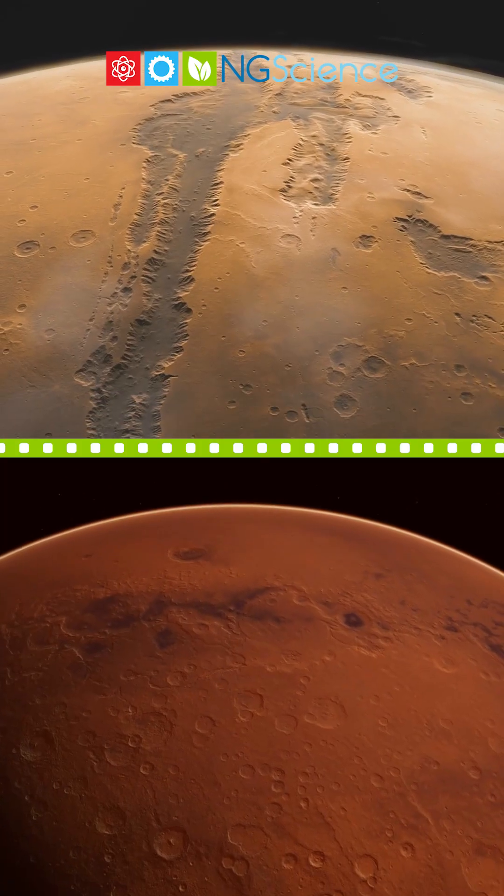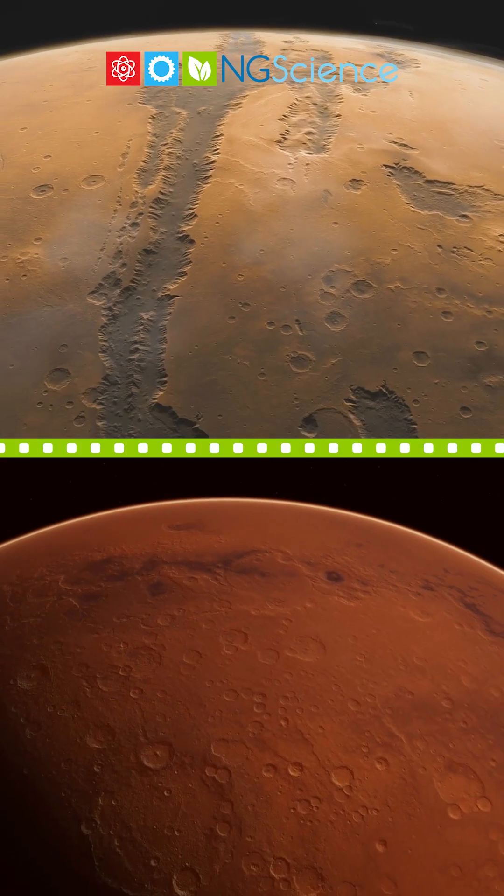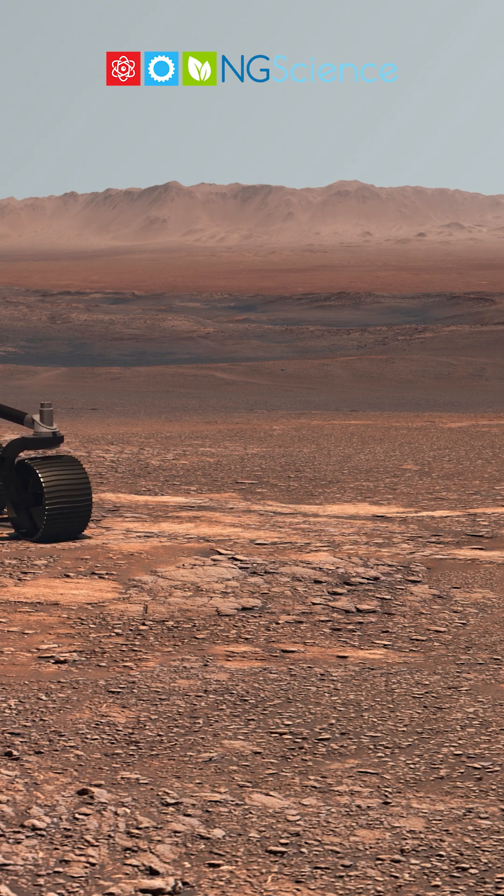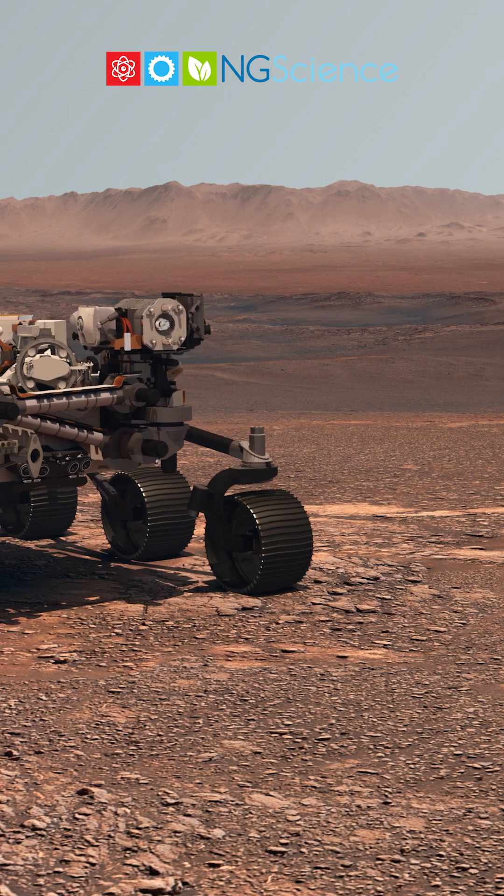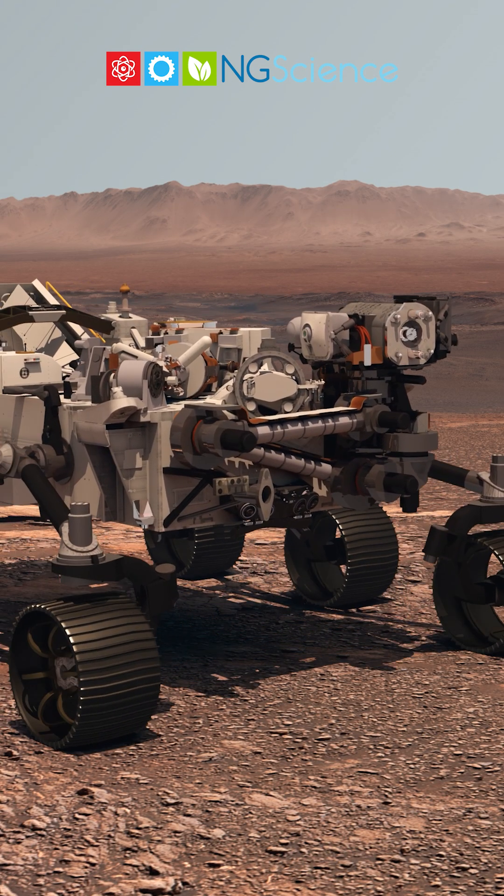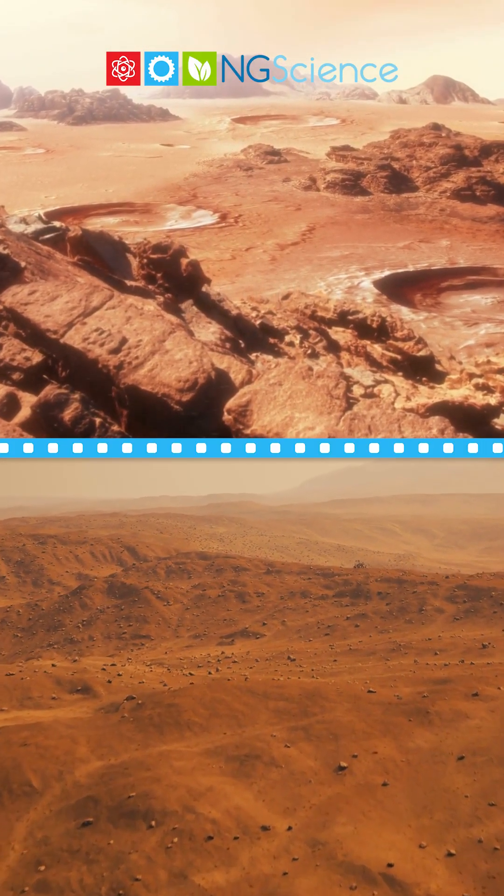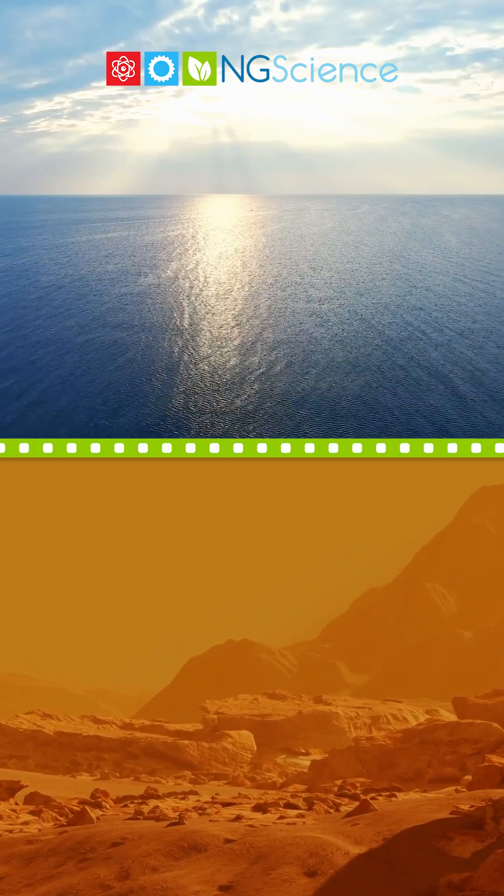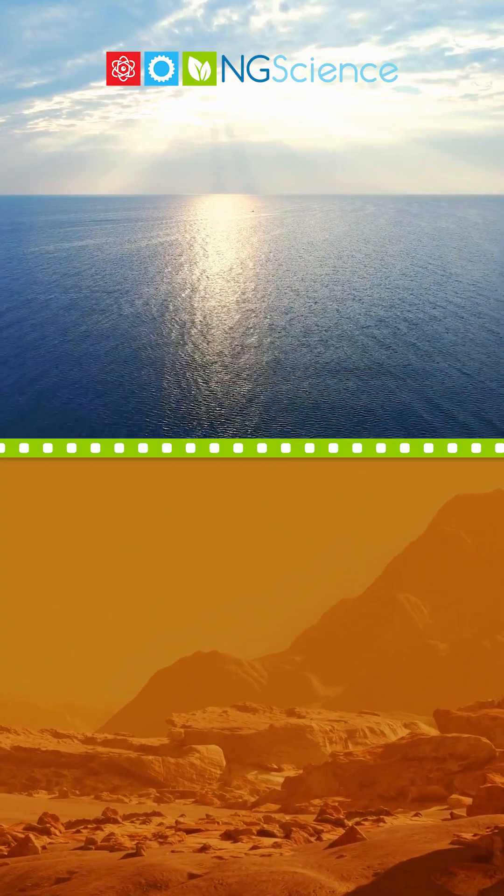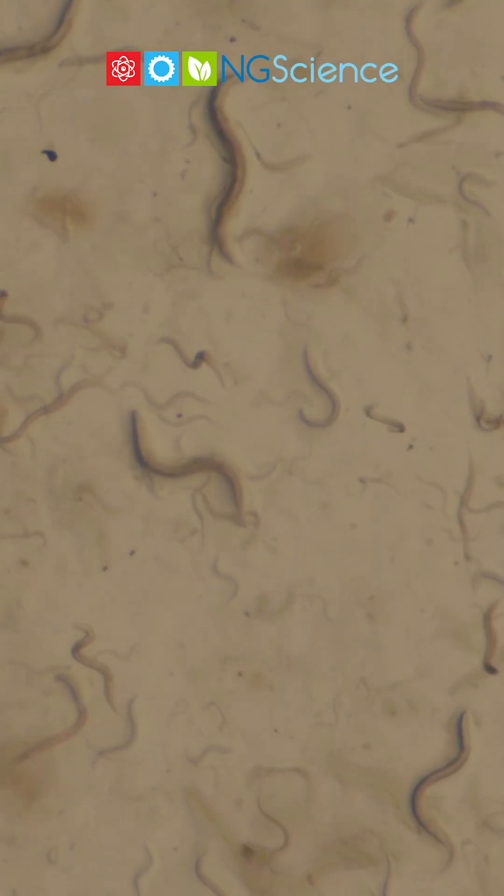Our last stop is Mars, the red planet. Mars is covered in red dust and rocks. It has the tallest volcano and the deepest canyon in the solar system. Scientists think there might have been water on Mars long ago and maybe even tiny life forms.